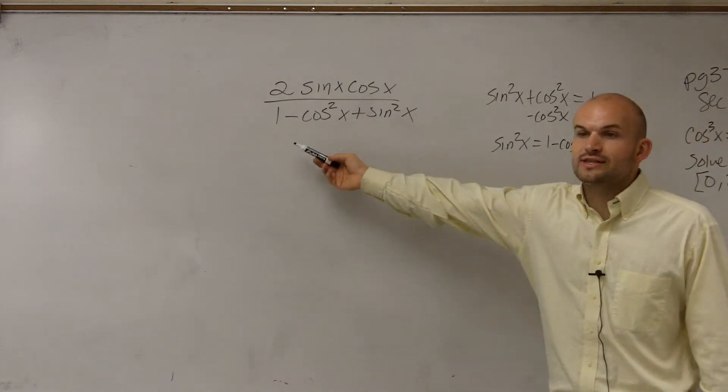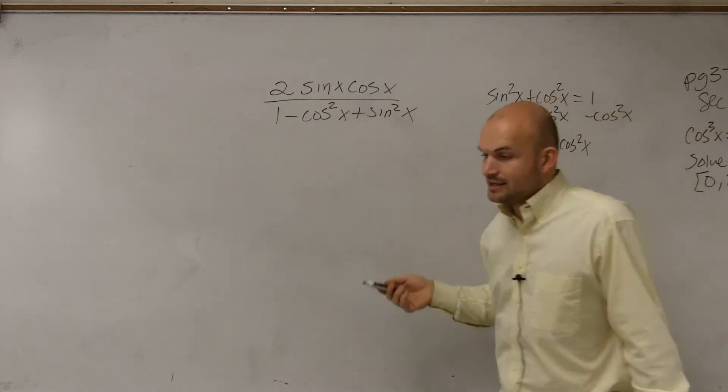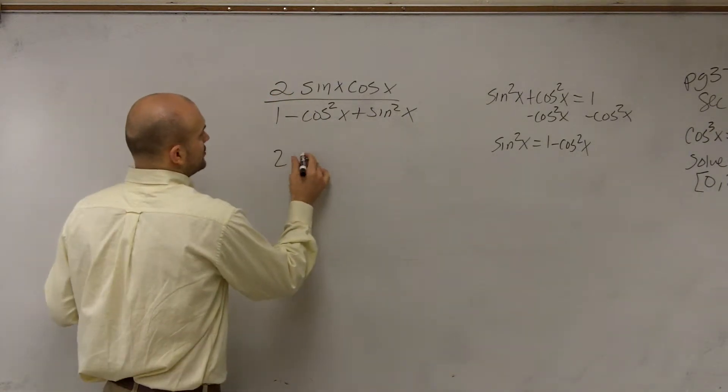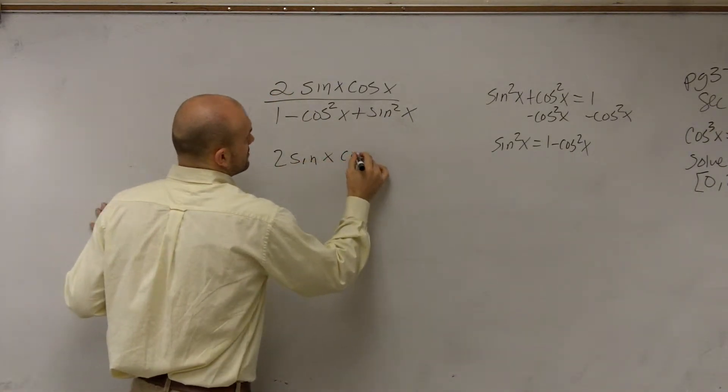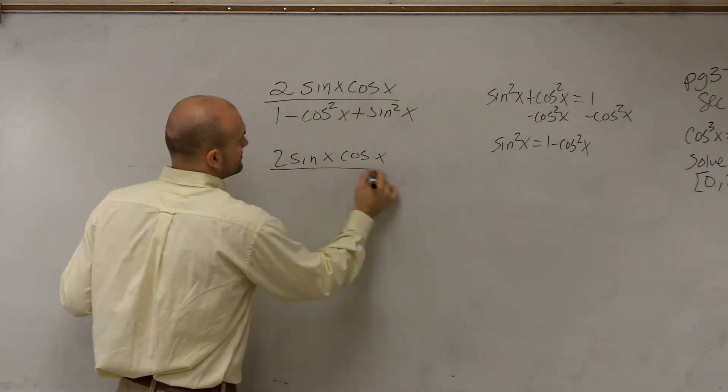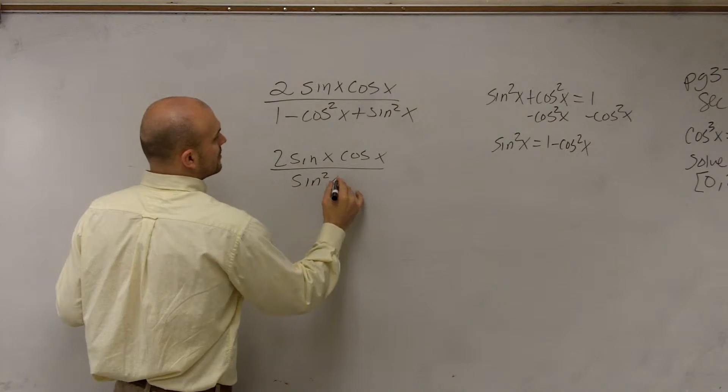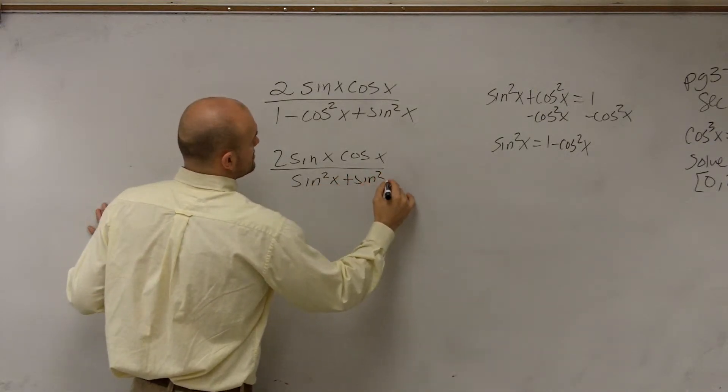So if we can at least make them all sines on the bottom, then we can at least combine them and see what we get. So I have 2 sine of x cosine of x divided by sine squared of x plus sine squared of x.